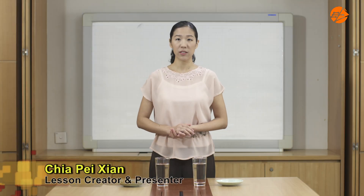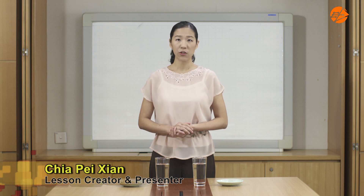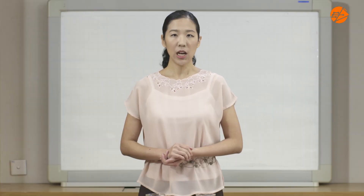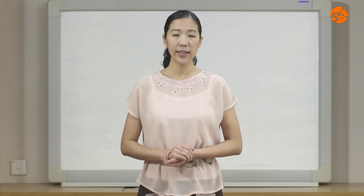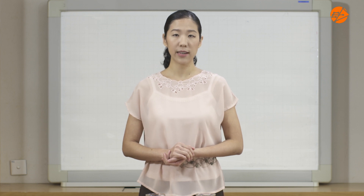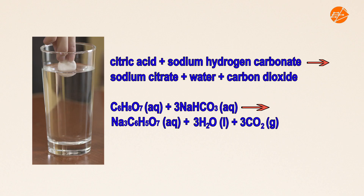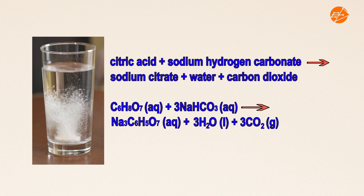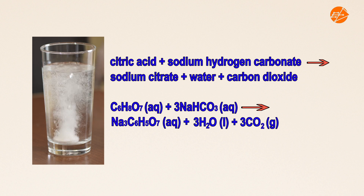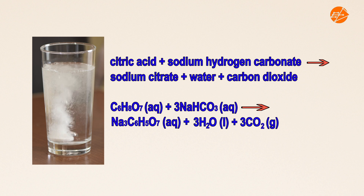How does size affect the speed of a reaction? Let's find out using an experiment that you can try at home. We will be using effervescent vitamin C tablets and water. As the tablet dissolves, a reaction occurs between aqueous citric acid and sodium hydrogen carbonate to produce sodium citrate, water and carbon dioxide gas.